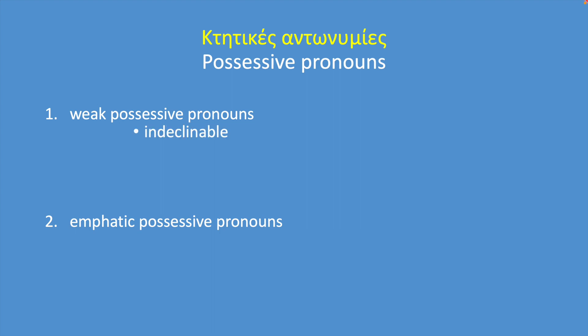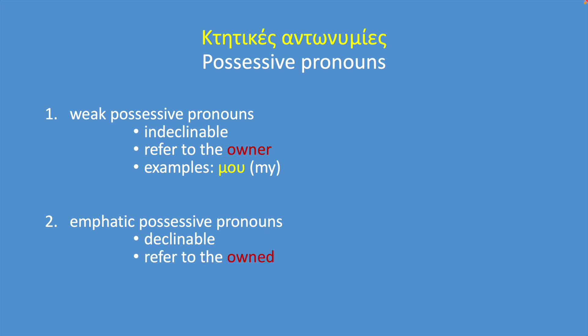The weak ones are indeclinable, meaning they are unchangeable. They refer to the owner — the person or thing that owns, that possesses. For example... The emphatic ones are declinable. They refer to the owned, the belongings, the possessions that the owner possesses. For example...